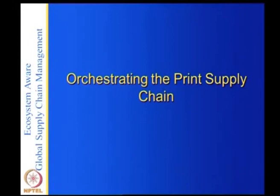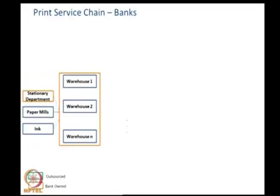Let us briefly look at orchestrating a print supply chain. Suppose a bank needs a lot of printed material. Even though most transactions are online, customers still need to fill in forms for auto loans or house loans, get signatures, and the bank needs to send credit card statements and account statements. These forms need to be printed. For a bank with four to five thousand branches, this costs like four to five hundred crores per annum — a very significant expense.